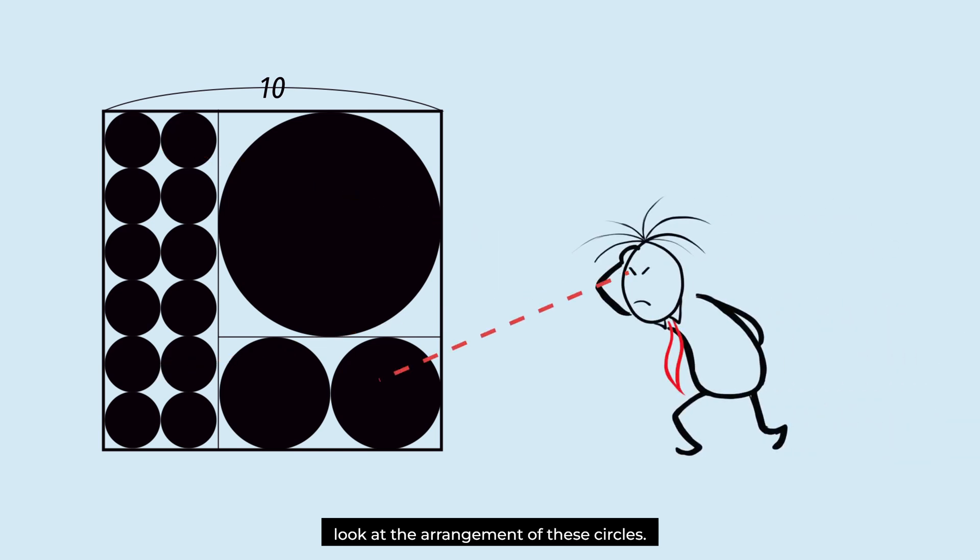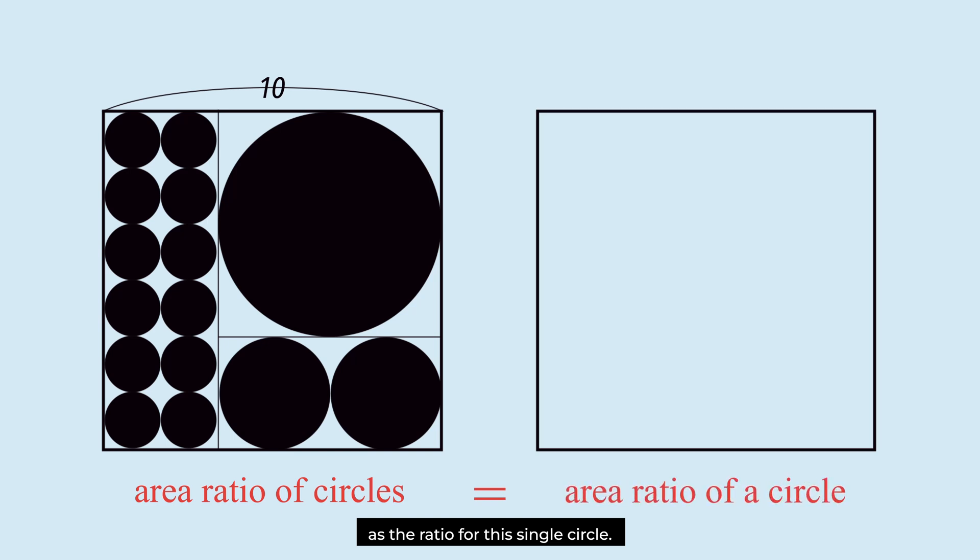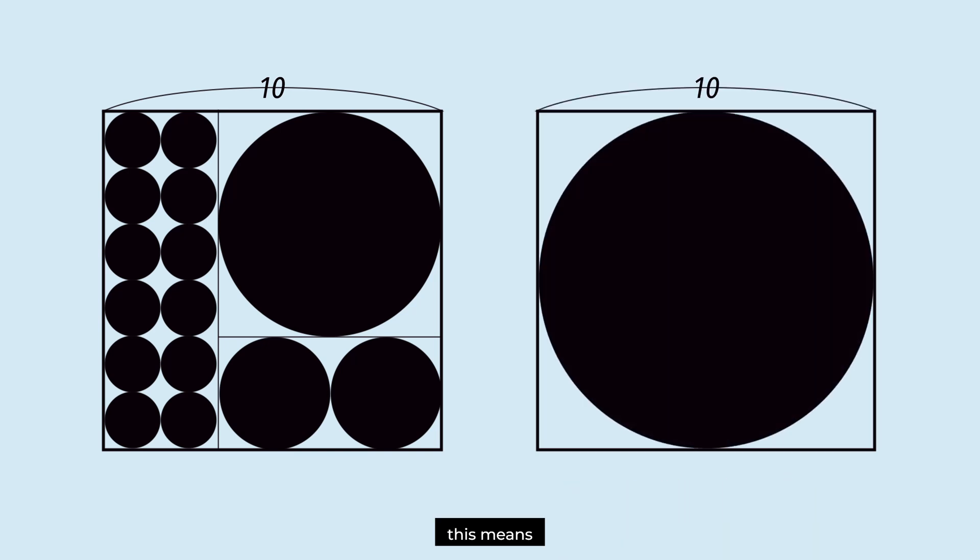Look at the arrangement of these circles. They are connected without overlapping or empty spaces. Therefore, the area ratio of these circles is the same as the ratio for this single circle. This means the total area of these circles is equal to the area of this single circle.